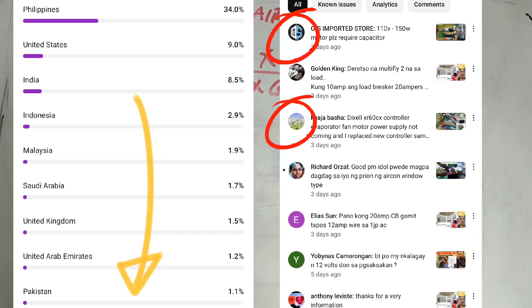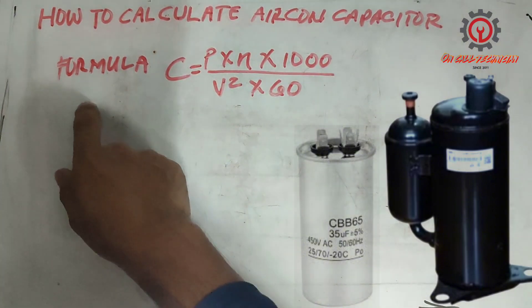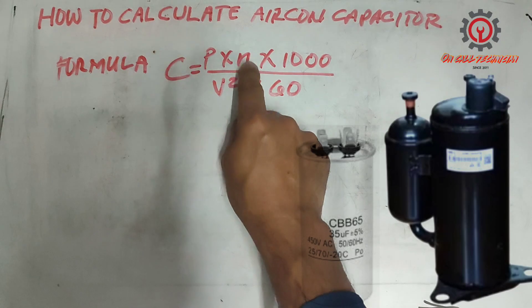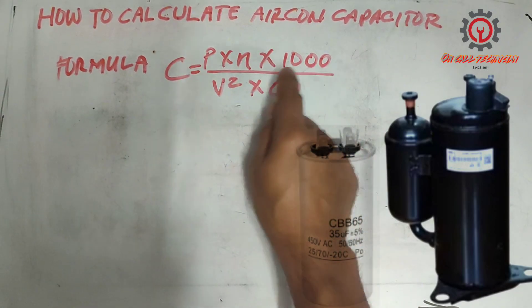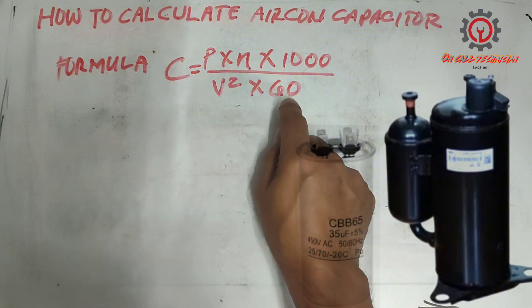Today we're going to calculate aircon capacitor and the formula is C equals P times N times 1000 divided by V squared times 60.